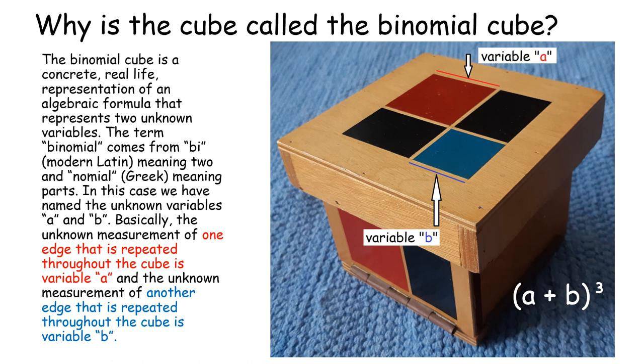Basically, the unknown measurement of one edge that is repeated throughout the cube is variable A, and the unknown measurement of another edge that is repeated throughout the cube is variable B.